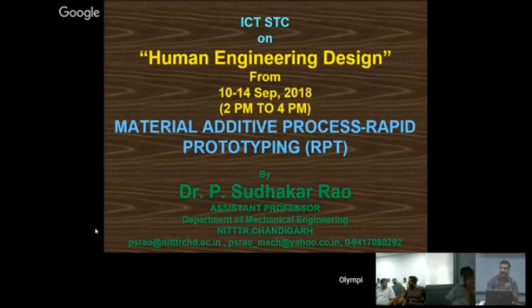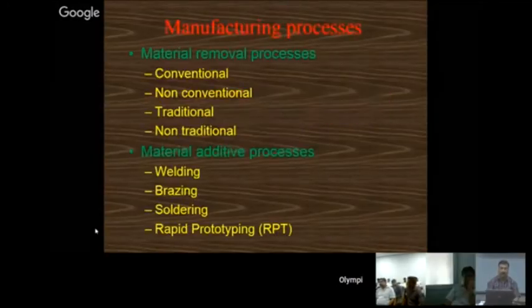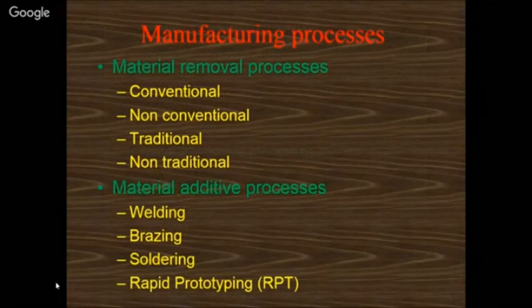The topic is material additive process, specifically rapid prototyping. It is one kind of product design and development process where we can develop small parts. Before starting RPT, I want to give a brief introduction about manufacturing processes. There are two kinds of processes normally observed in the manufacturing area: one is material removal process and the second is material additive process.